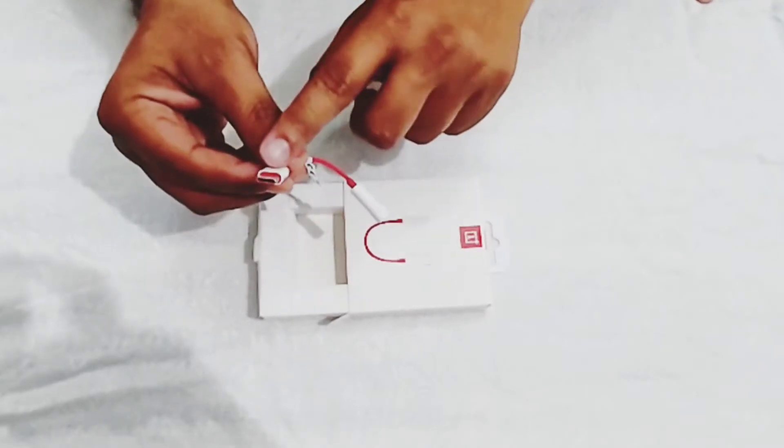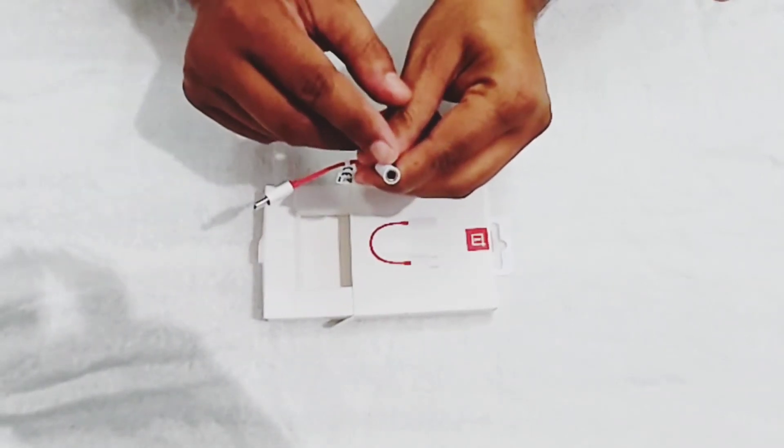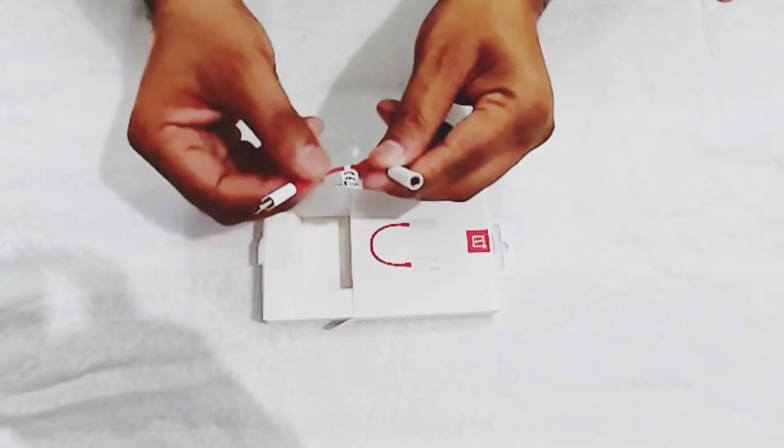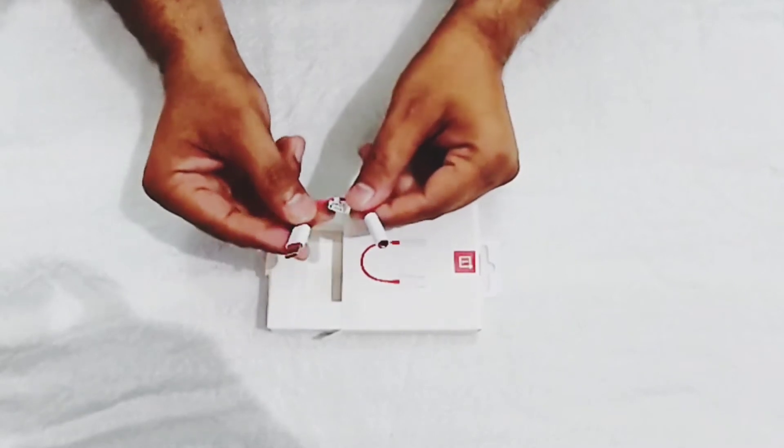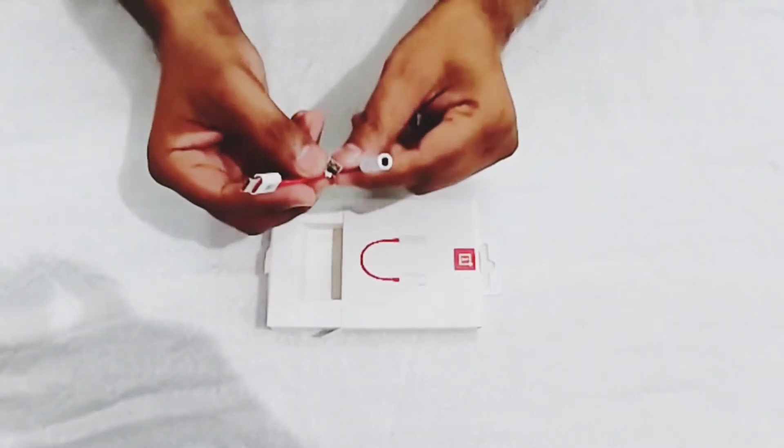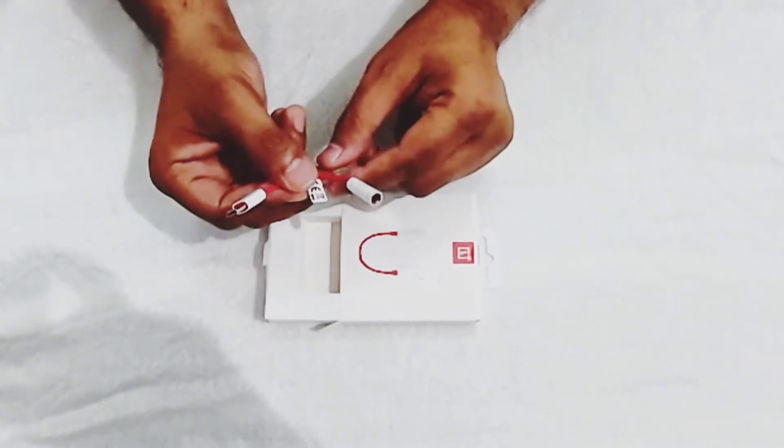So friends, this is the USB Type-C end which goes into the phone, and here is the 3.5mm audio jack. If you have OnePlus phones, you don't need to buy new earphones. You can use your old earphones with this adapter. Let's connect it and see how it works.